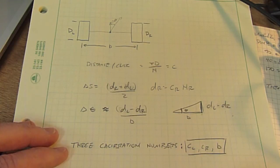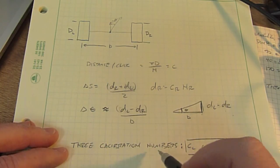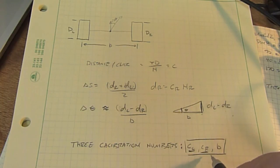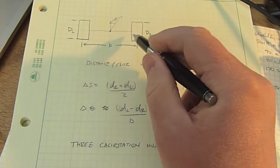For the complete odometry system for your robot, there are three calibration numbers: the calibration factor for the left wheel, the calibration factor for the right wheel, and B, which is the effective baseline between the two wheels.